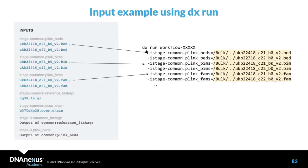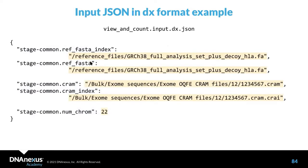In case you don't want to specify inputs as command line arguments and prefer a JSON file instead: in the first session we showed how you can generate a WDL format JSON input and how to use the DX compiler to transform this WDL JSON to DNAnexus JSON. Here's how you can fill this in using the WDL workflow from our first session.